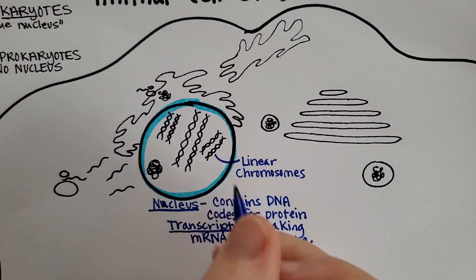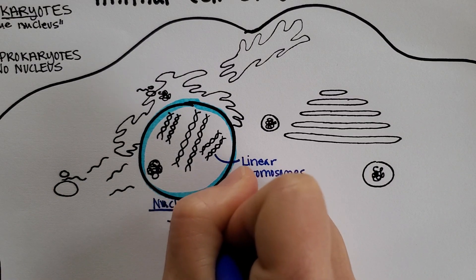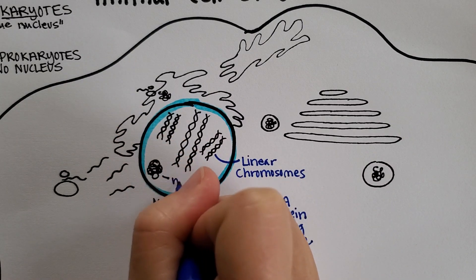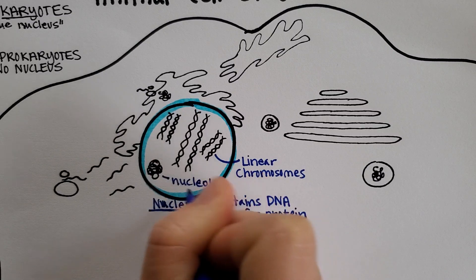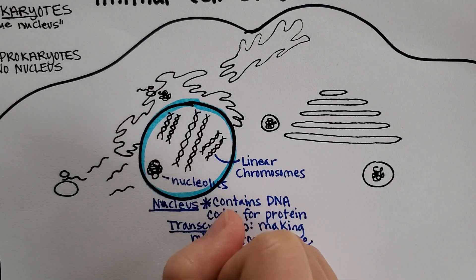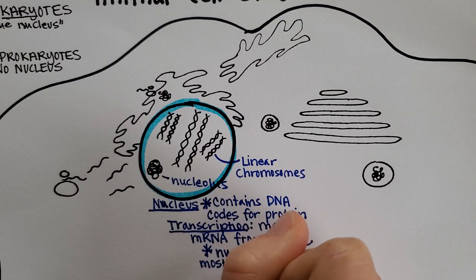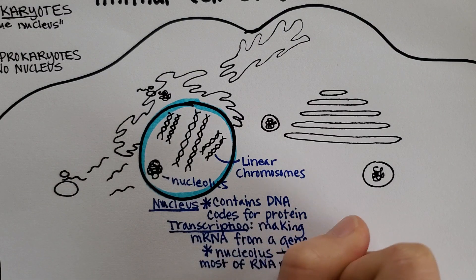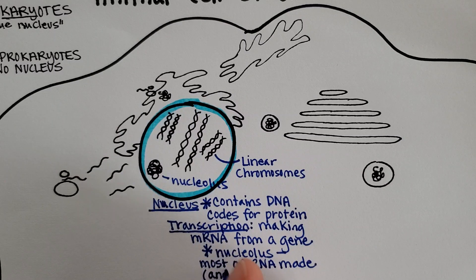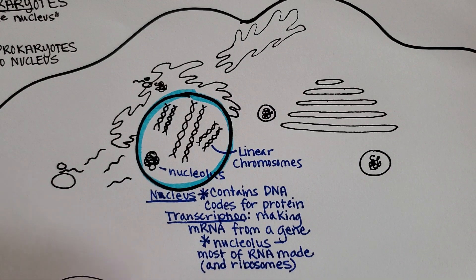Right here is the nucleolus. The nucleus contains the DNA, and it also contains the nucleolus — that's the structure right here. It literally means 'little nucleus,' because when they first found it they didn't know what it did. The nucleolus is where most of the RNA in the cell is made, and also the ribosomes. Ribosomes are going to translate mRNA into a protein.